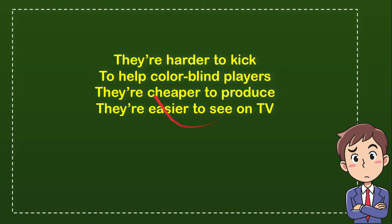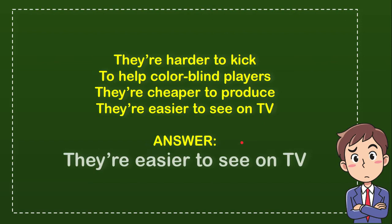This answer makes a lot of sense. The answer for the question is: they are easier to see on TV. You have a whole green grass field, and if the color of the ball were green, how could you watch the soccer match on television? So yes, that's the answer — they are easier to see on TV.